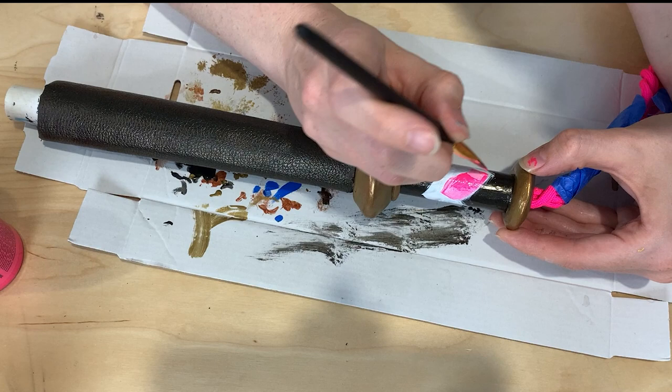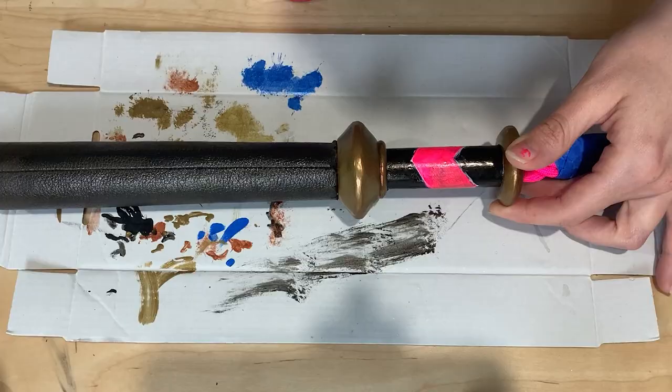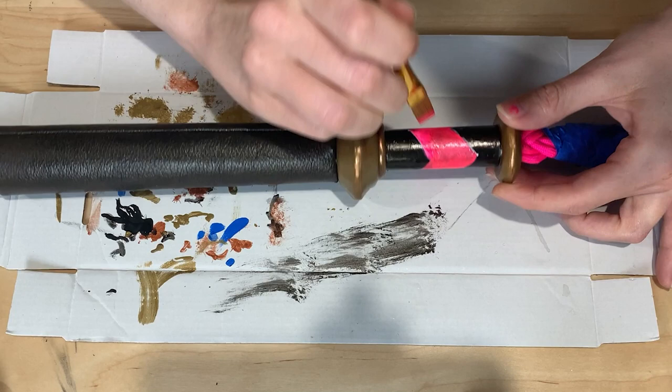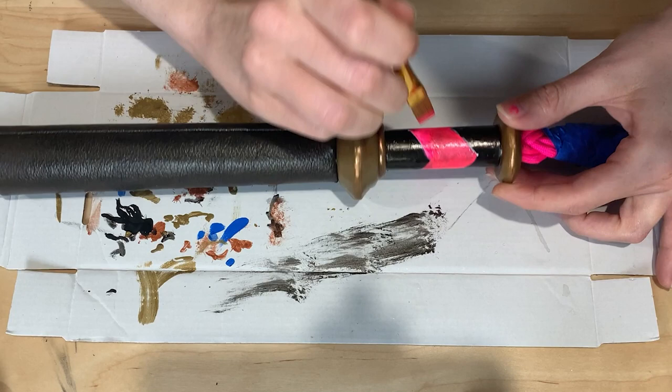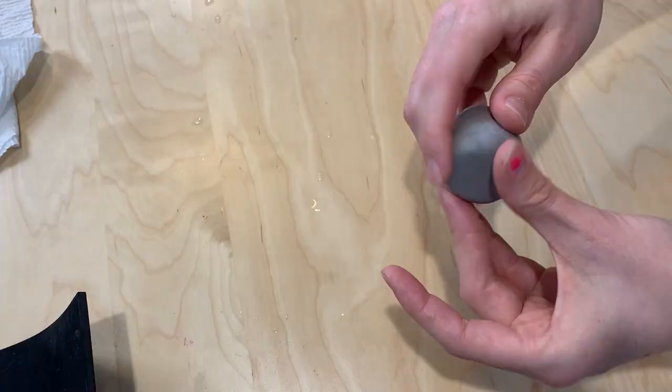So Flexbond for the primer, and Plaid FX for the paints. The black section was Plaid FX metallic black, and the bright pink section I used a base coat of white, followed by neon pink and metallic red over the top.